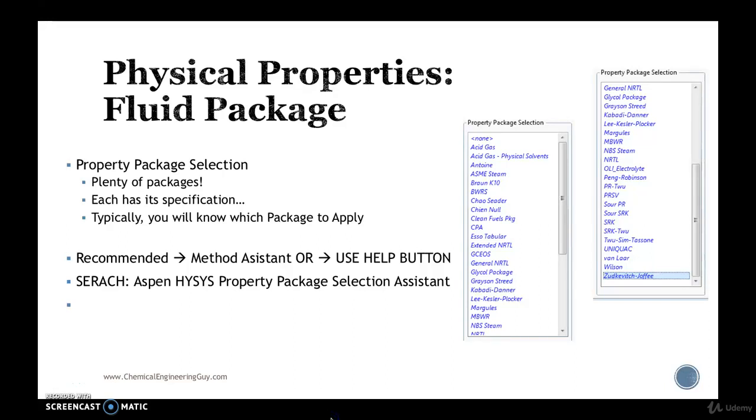Now, recall that we are starting the physical property environment and we have previously stated that we need two specifications. The first one will be the component list and the second one is the fluid package. Right now we're going to see why we need a fluid package and how can we choose it.